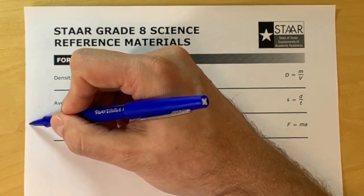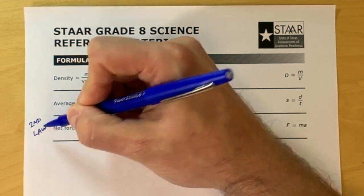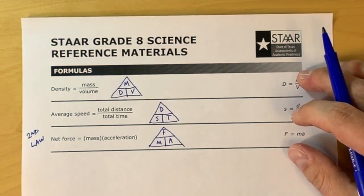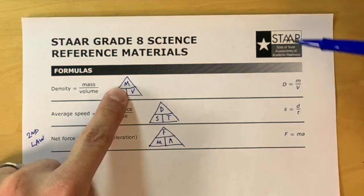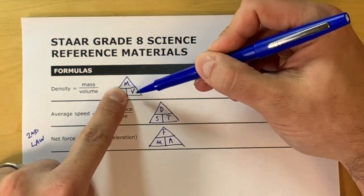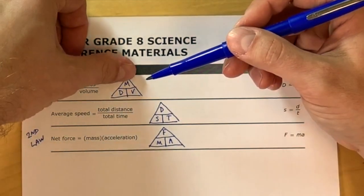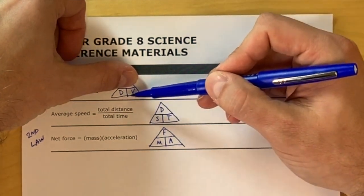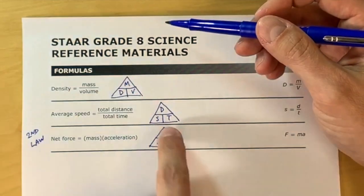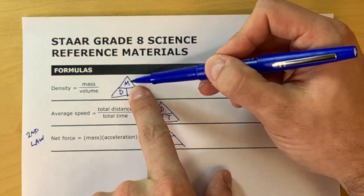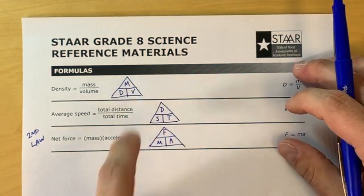For this third one here, this is also Newton's second law, or the formula for Newton's second law. To solve, for example, on density, if we wanted to solve for density, it's mass divided by volume. If we wanted to solve for mass, it's density multiplied by volume. If we wanted to solve for volume, it would be mass divided by density.